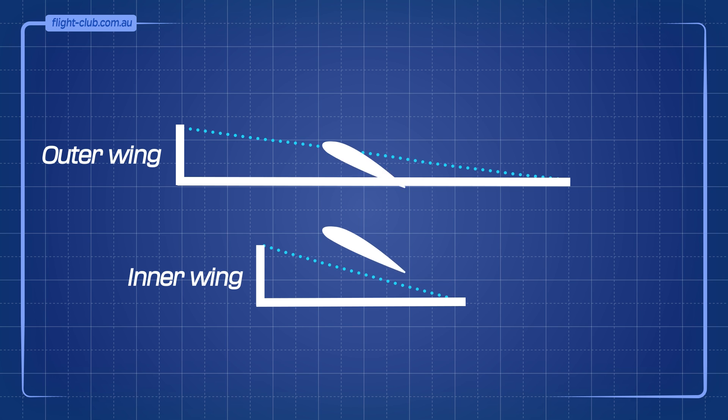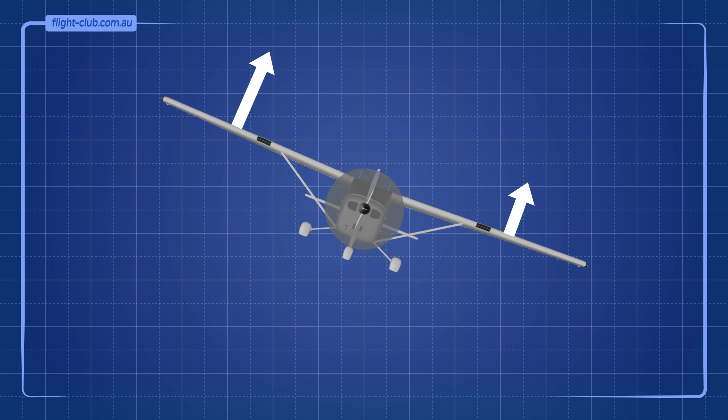Consequently, the relative airflow that the outer wing experiences is shallower than the steeper relative airflow of the inner wing. The angle of attack of the outer wing is therefore greater than that for the inner wing, thus the outer wing generates more lift. This is called overbanking in a climbing turn and causes the bank angle of the aeroplane to want to increase more and more.